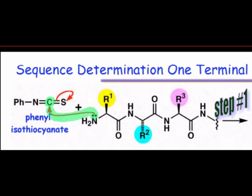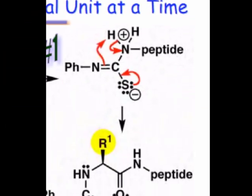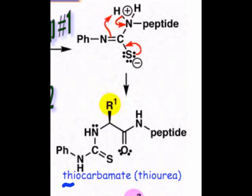Since the N-terminus is the only nitrogen atom that is not part of an amide, addition takes place selectively at the N-terminus. An internal proton transfer then generates a neutral intermediate called a thiocarbamate. So far, this mechanism should look conceptually similar to the tagging reactions we saw in the last webcast.